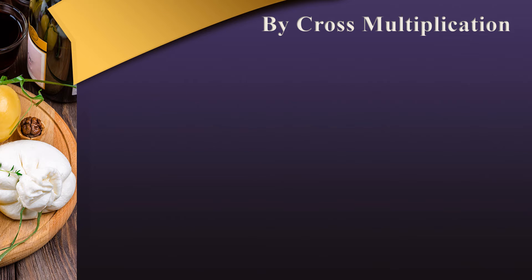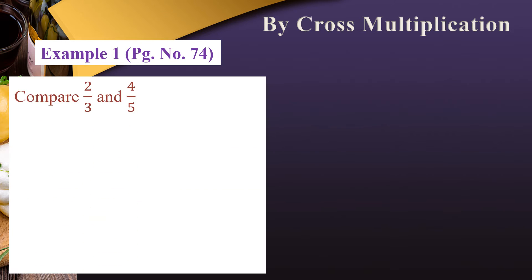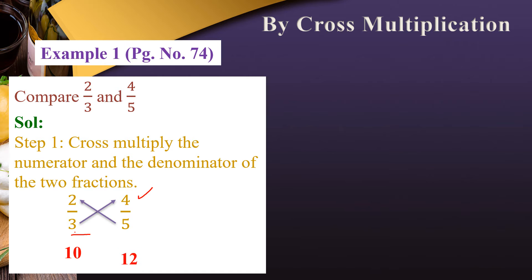The next method is Cross Multiplication. Example number 1, page number 74: Compare 2/3 and 4/5. Solution: We multiply the denominator of the second fraction with the numerator of the first fraction: 2 × 5 = 10. Then we multiply the denominator of the first fraction with the numerator of the second fraction: 3 × 4 = 12.